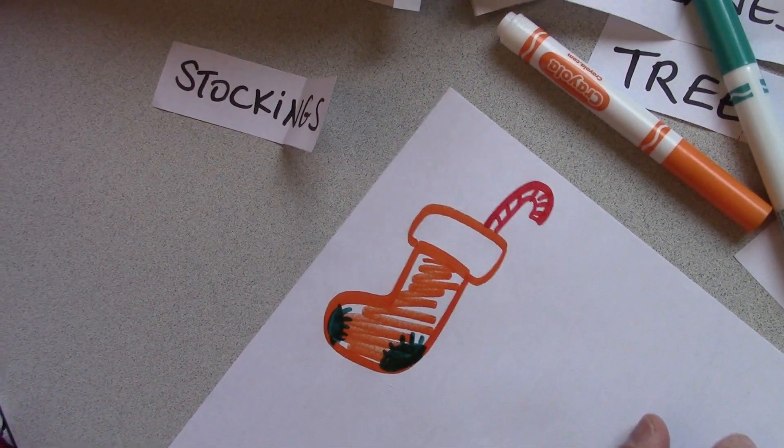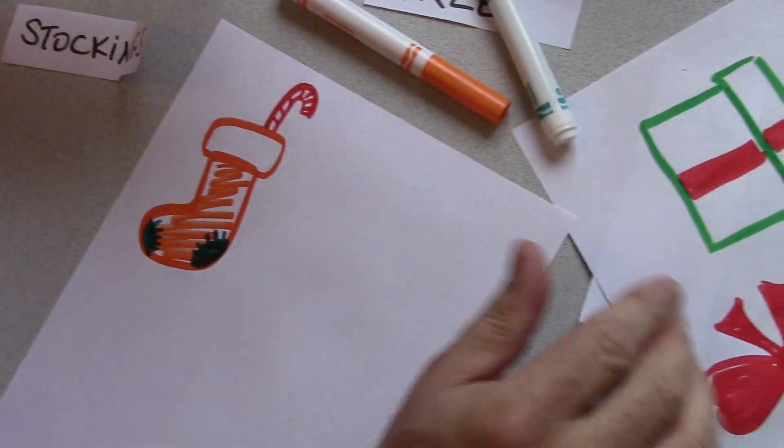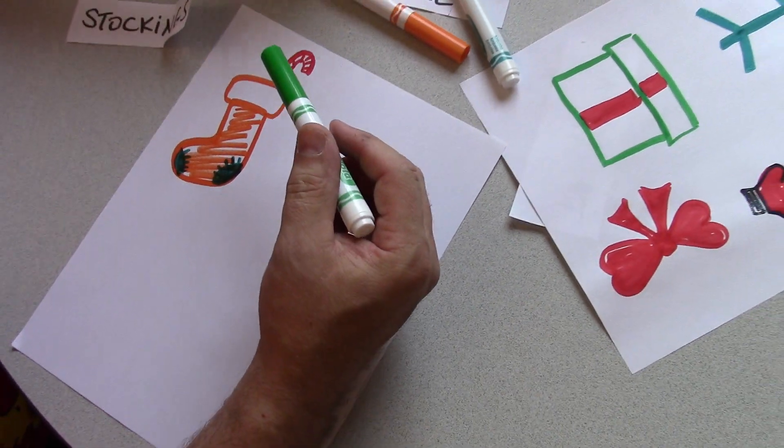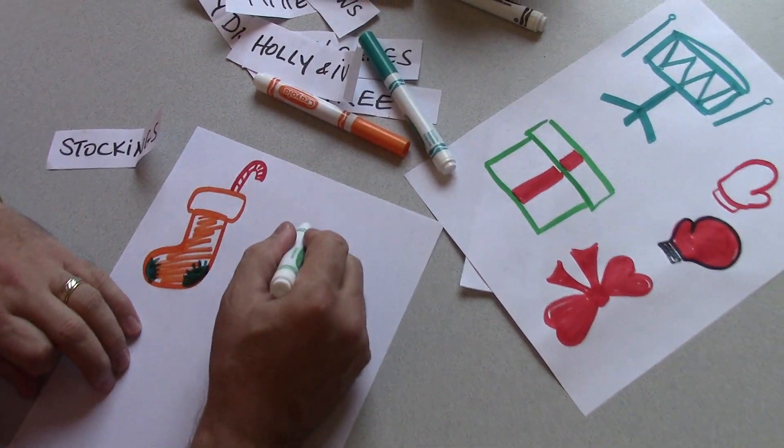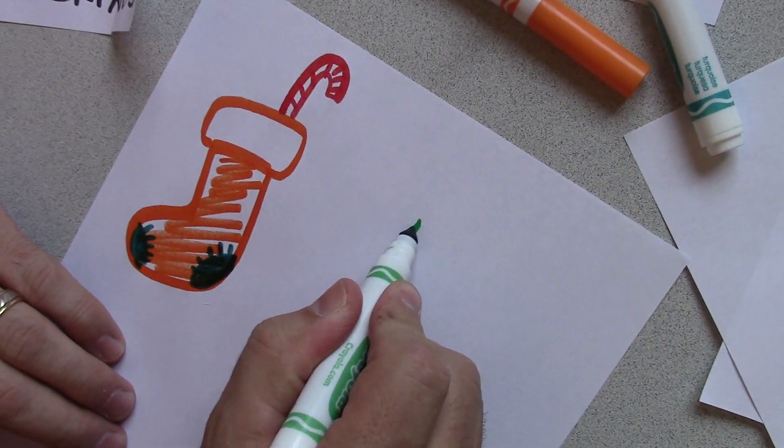So anyways, that's the idea to draw some basic shapes and see if you can make stuff out of these different words. Look here, here we go. Holly and Ivy. Here's, watch how much fun this one is to do. Start like that.